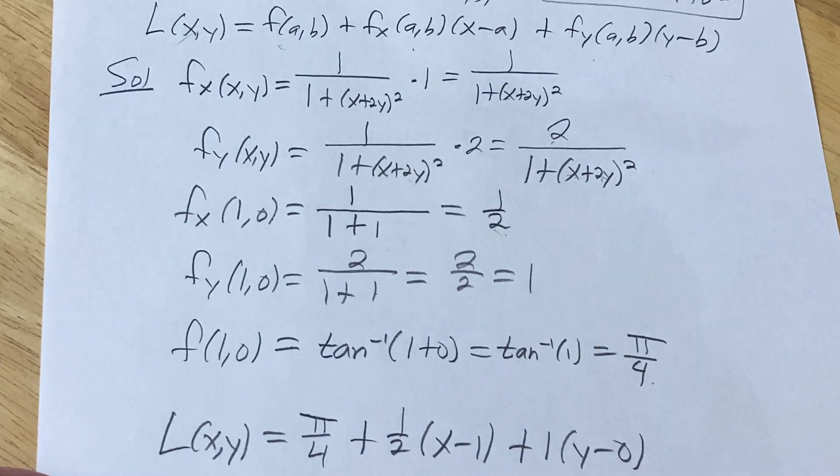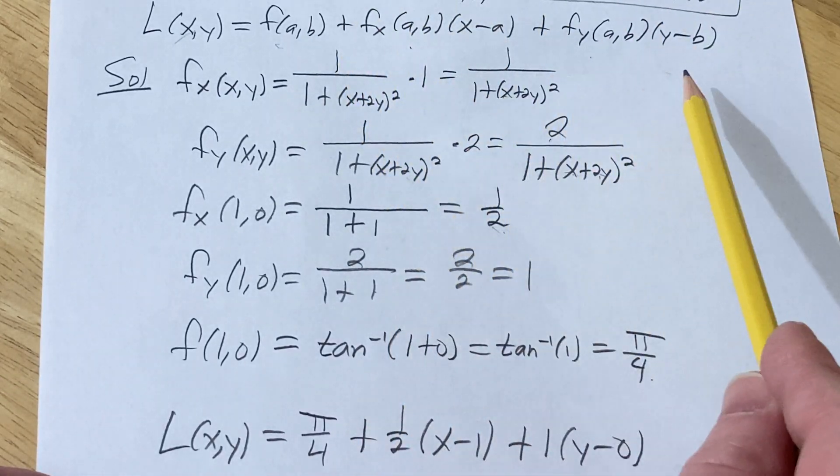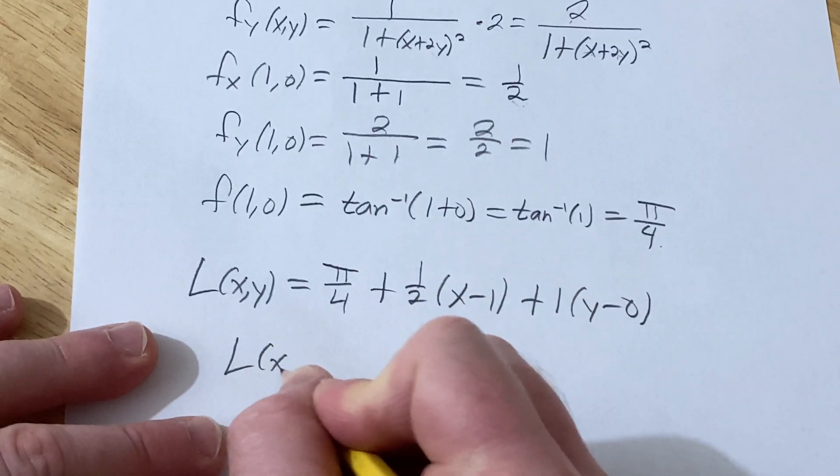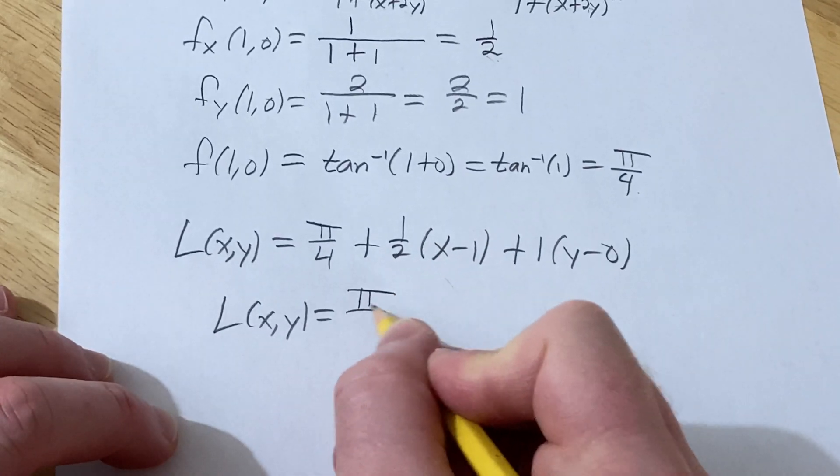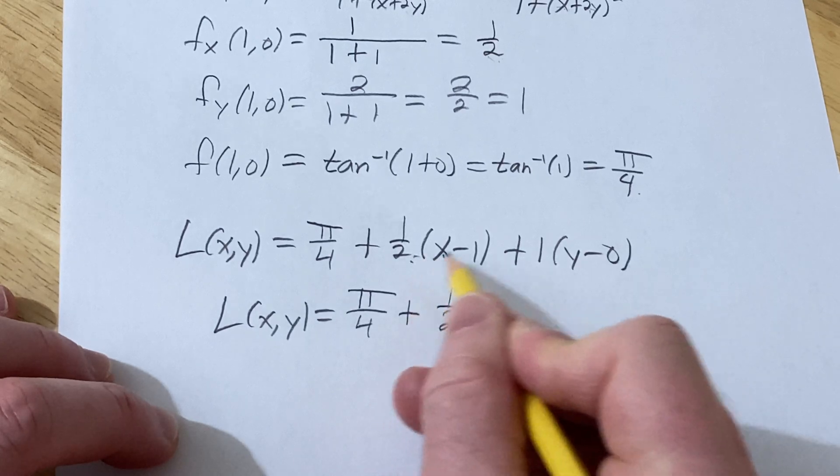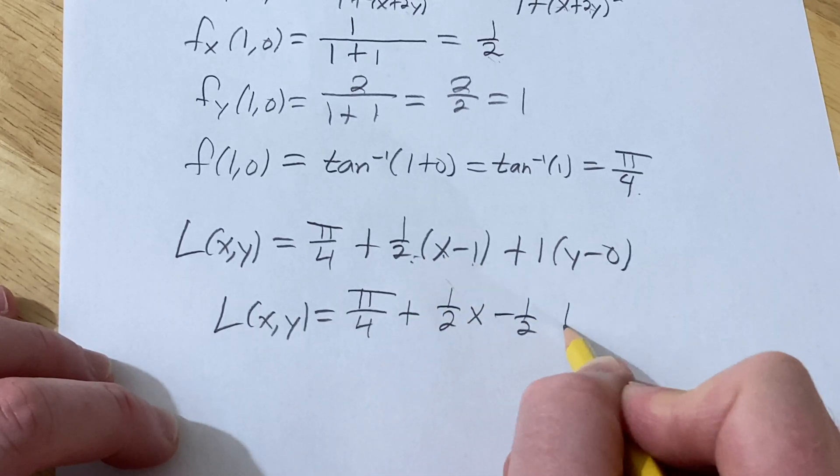Okay, so just using the formula you see up here, down here. So we can distribute now and clean this up. This is π over 4 plus 1 half x minus 1 half plus y.